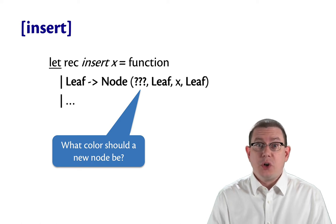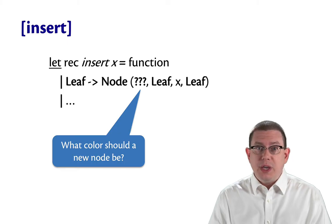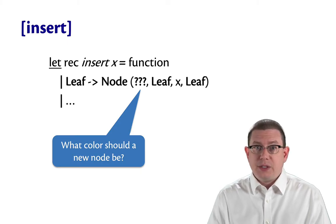To start implementing insert for red-black trees, we can use the same code that we used for insert into binary search trees. So if we're starting off with an empty tree, which is a leaf, and we want to insert an element x, we'll create a new node with x stored at that node and with empty subtrees.